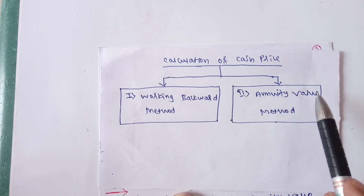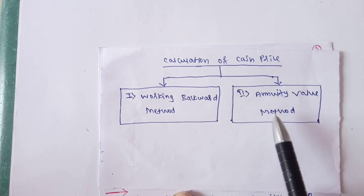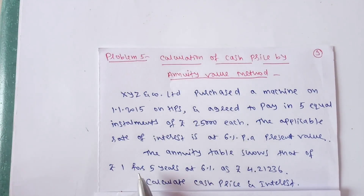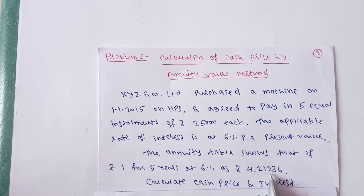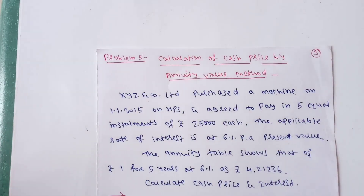The annuity value method is used when two conditions are satisfied in the problem. Condition number one: the annuity value of Rs.1 is given. Second condition: the installments are equal. Only then can we use the annuity value method. Seeing this problem, both conditions are satisfied — the annuity value of Rs.1 for 5 years at 6% (4.21236) is given, and the installment amounts are equal. So, we can solve this problem using the annuity value method.